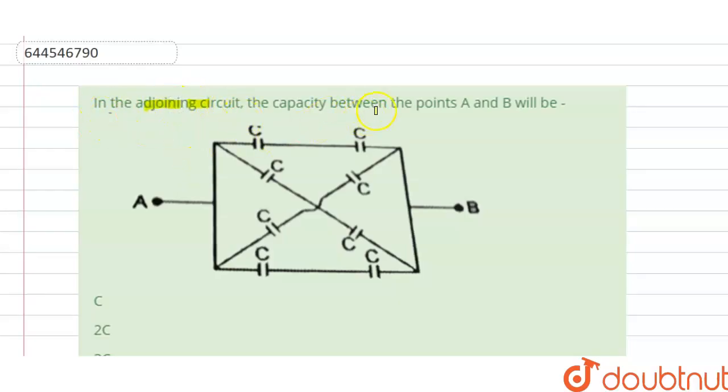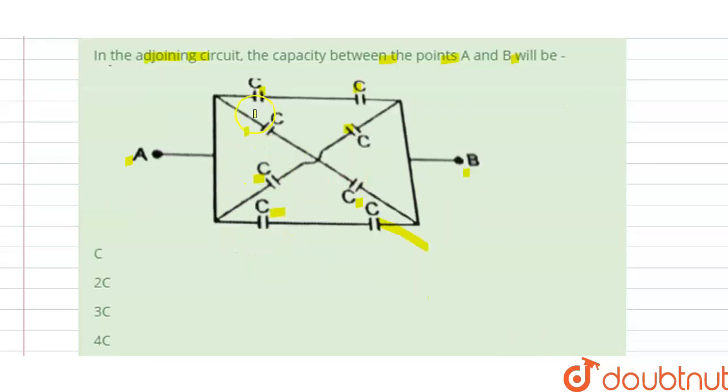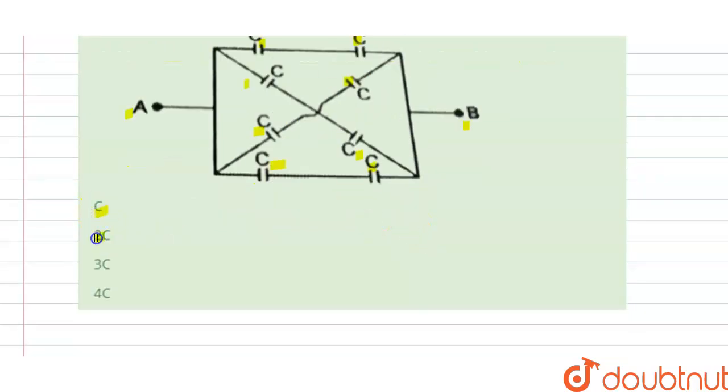in the adjoining circuit, the capacity between the point A and B will be. So this is A and B, and these are capacitance C, and this is C connected here. So we have four options given here, and we have to find the correct option.